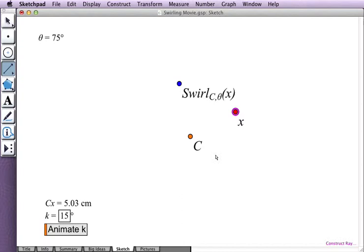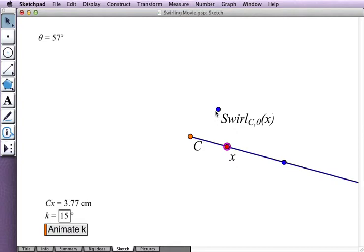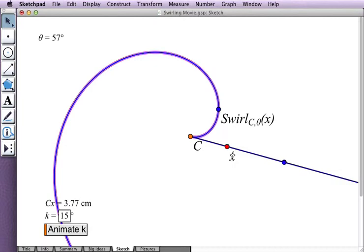I can get a better picture of how this new function behaves by constructing a ray from point C, restricting my independent variable to the ray, and constructing the locus of the dependent variable to see the range that corresponds to this domain.